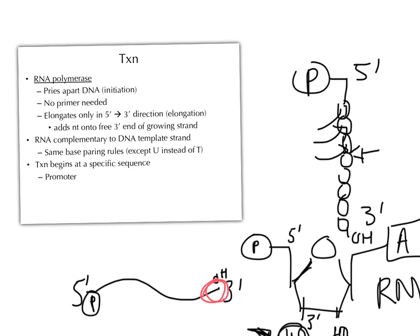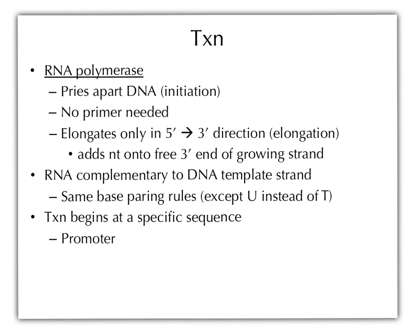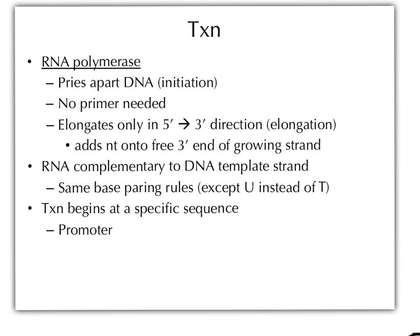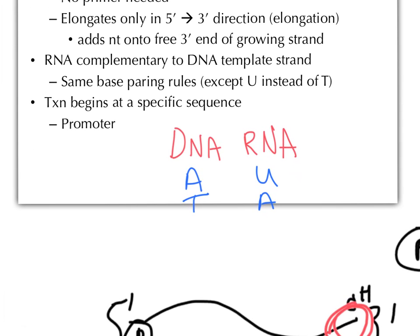RNA polymerase uses the same base pairing rules that DNA polymerase did, except in RNA there's no thymine — there's uracil instead. So when the DNA template has an A, the RNA puts in a U. When DNA has a T, the RNA puts in an A; when DNA has a C, it's a G; and when DNA has a G, it's a C. That's how the RNA is built in a specific order based off the DNA sequence.